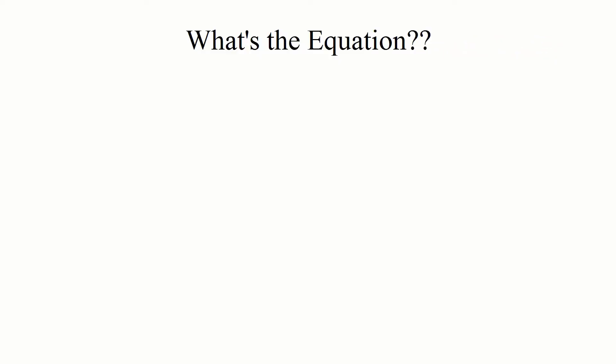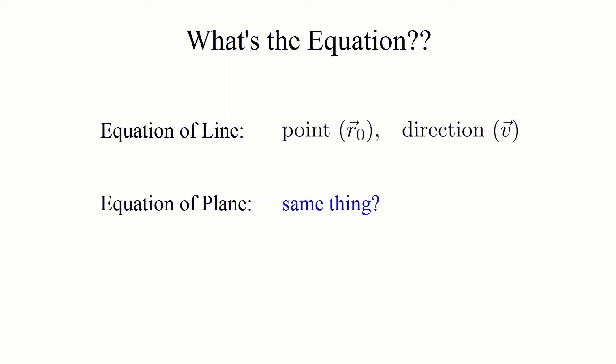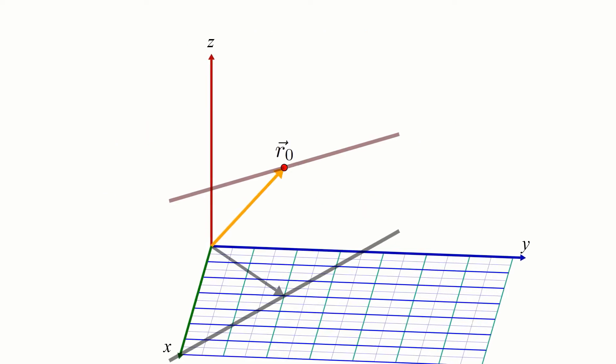Well, for a line, we were able to do this using a point and a direction vector. So maybe for a plane, we can do something similar, using a point on the plane and a vector parallel to the plane to describe its orientation in space. Okay, let's give it a try.